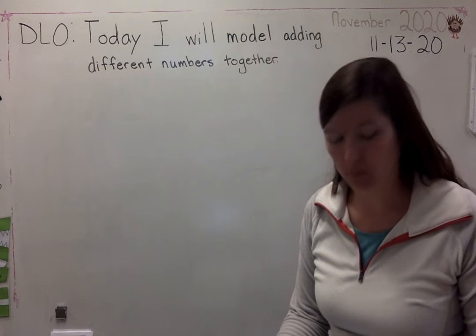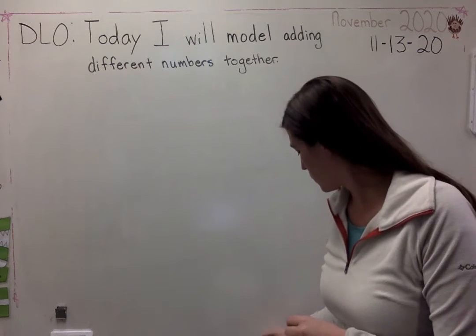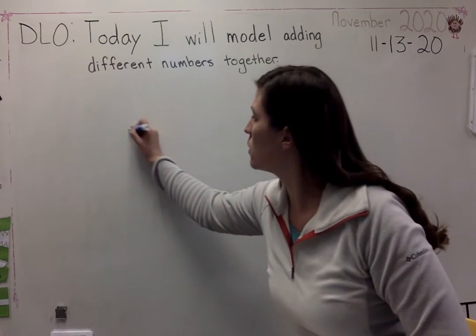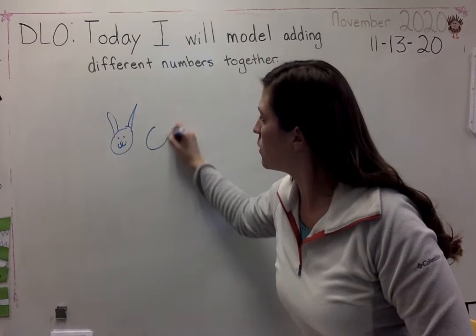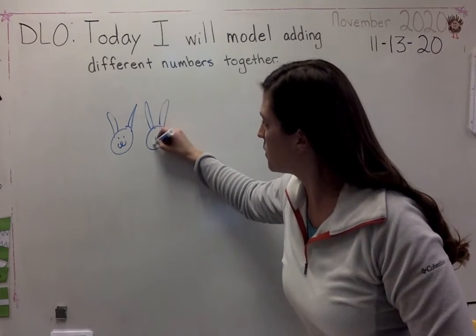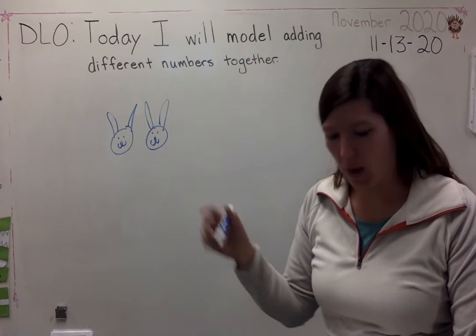So what do we know so far? We know there are two rabbits in a hole. We have two rabbits in a hole. So I modeled it. I've got two rabbits.